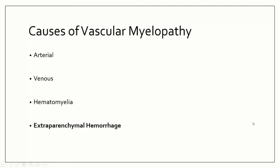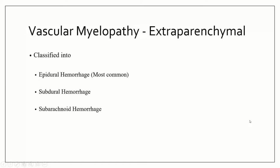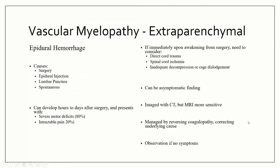Last but not least, in the last five minutes we'll talk about extraparenchymal bleeds — meaning bleeding outside of the actual cord itself. Just like in the brain, these can be epidural, subdural, or subarachnoid. Epidural is by far the most common, usually happening because of surgery, epidural infection, injection, or lumbar puncture — meaning iatrogenic. It can rarely happen spontaneously, usually when people are on medications.